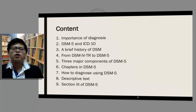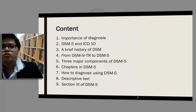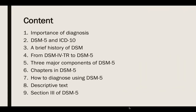These are the contents that we are going to discuss in these videos. We are going to talk about the importance of diagnosis, the relationship between DSM-5 and ICD-10. We are going to have a brief look at the history of DSM and also the transitions from DSM-4TR to DSM-5. We are going to look at the three major components of DSM-5, chapters in DSM-5, and how to diagnose using DSM-5. Lastly, we are going to look at the descriptive text of DSM-5 and also Section 3 of DSM-5.